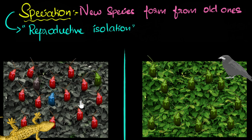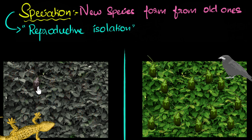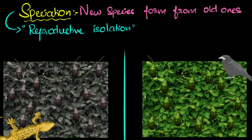But what happens in the other environment — the one with gray bushes? Over there, green doesn't have an advantage. Instead, it's the gray ones that have an advantage. After a few generations, it's the gray ones that get naturally selected.